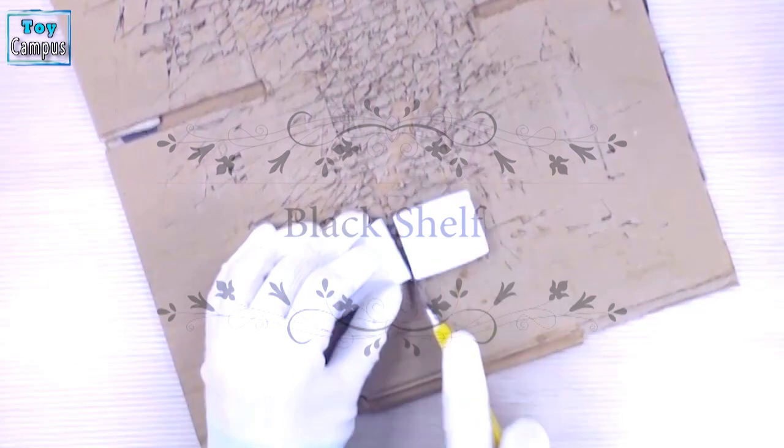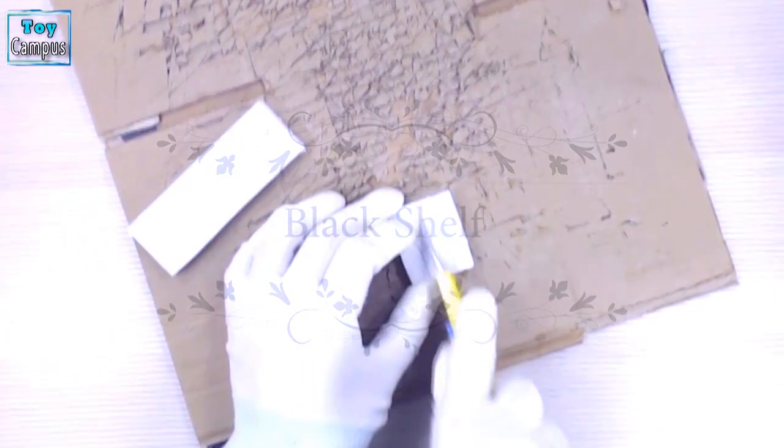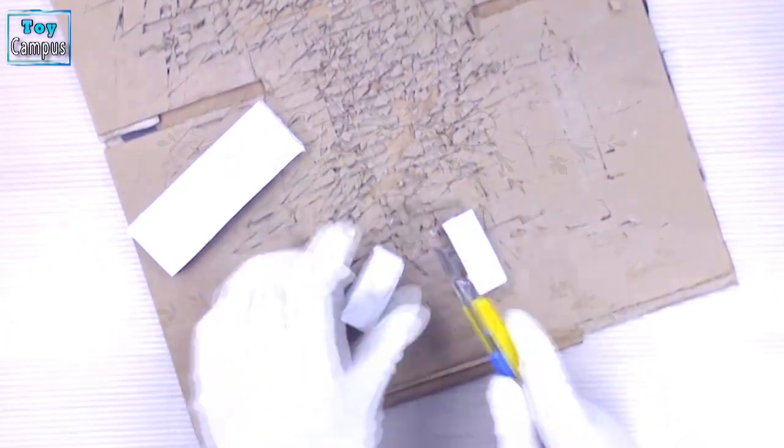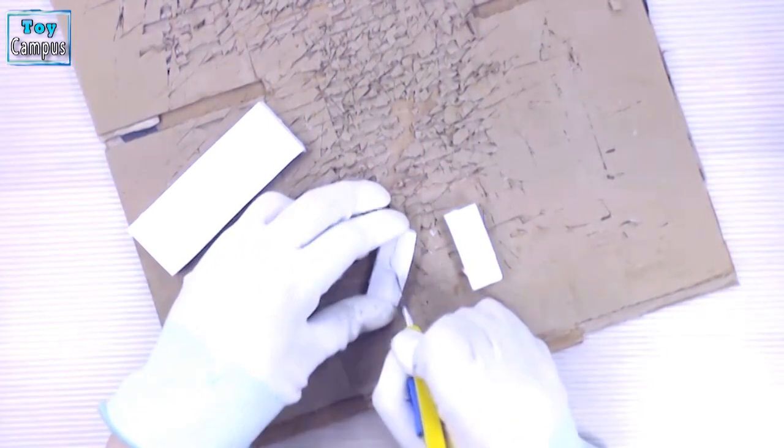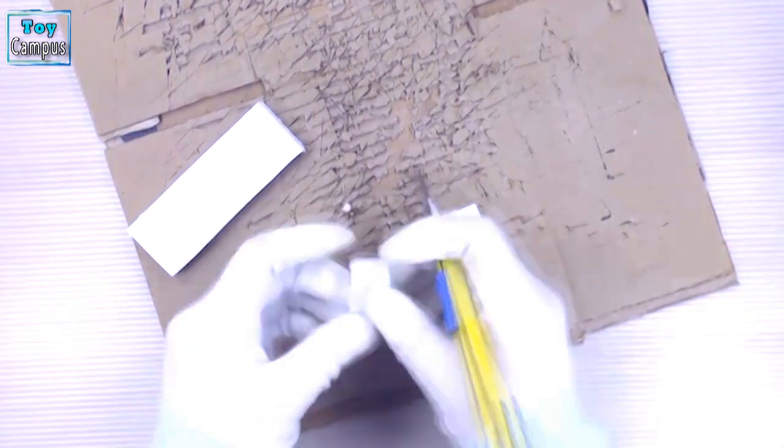We cut out a long rectangular piece from a foam board and two smaller rectangular pieces for the brackets. The brackets are cut into elaborate shapes. Then they are reinforced with cardboard.